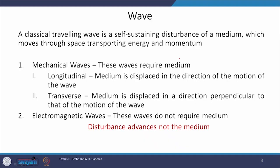More formally, a classical travelling wave is a self-sustaining disturbance of a medium which moves through space transporting energy and momentum. Now, these waves are of two types: the first one is mechanical wave — sound is the best example — and the second is electromagnetic waves, where our visible light falls.